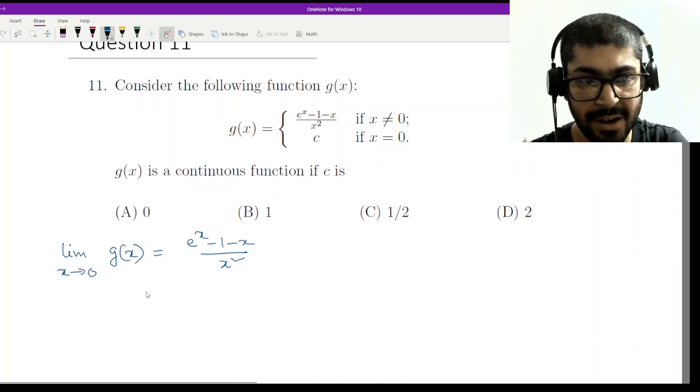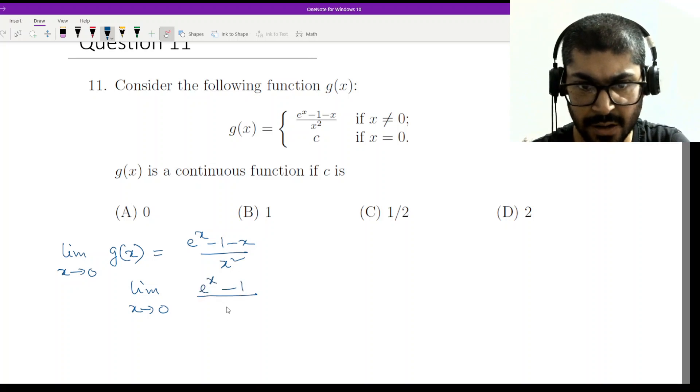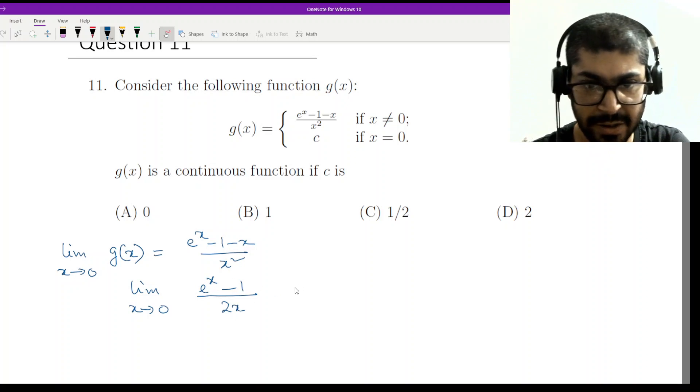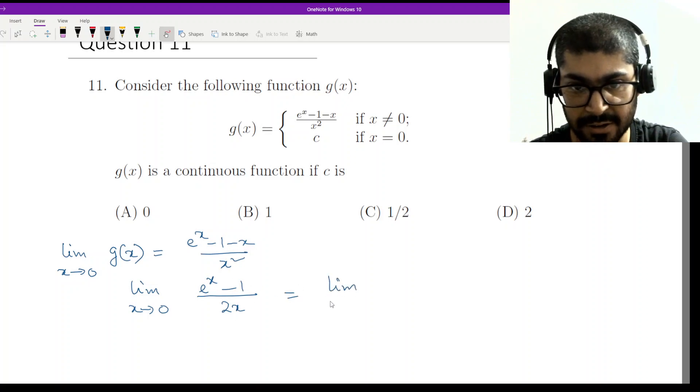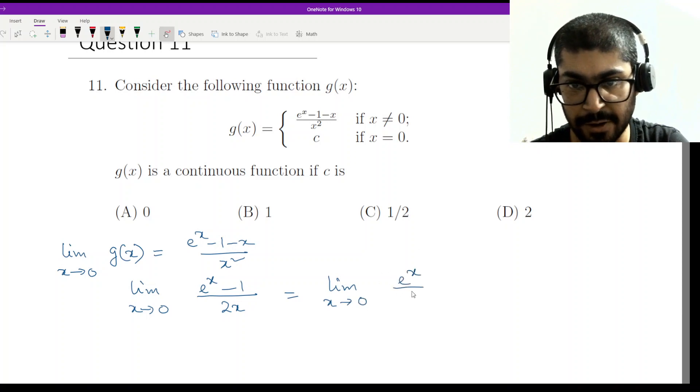Right? So apply L'Hôpital and you will be ending up with limit x tends to 0, you have e to the power x minus 1 by 2x, and again, this is 0 by 0 form. So apply L'Hôpital once again. You will end up with limit x tends to 0, e to the power x by 2.